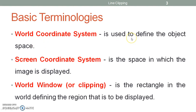The world coordinate system is used to define the object space — that is, the real-time object or scene which we are viewing is defined in the world coordinate system, and this world coordinate system is a device-independent coordinate system. When it comes to viewing an object on a computer or any display device, we define it in the screen coordinate system, which is the space in which the image is being displayed. The world window or clipping window is a rectangle in the world defining the region that is to be displayed.